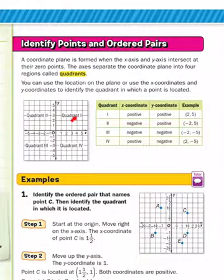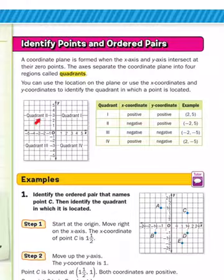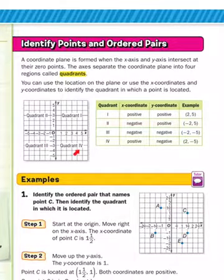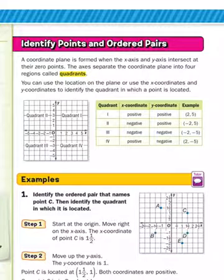This is quadrant 1, and we're going counterclockwise. This is quadrant 2, quadrant 3, and this is quadrant 4. So you do need to know where the quadrants are, and you do need to identify points in those quadrants.